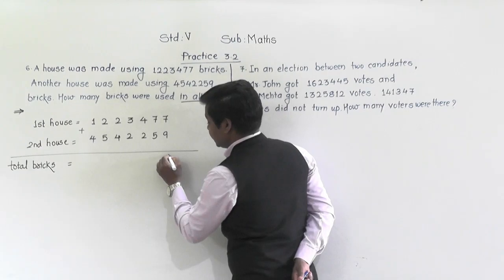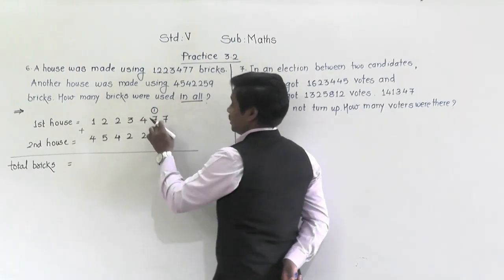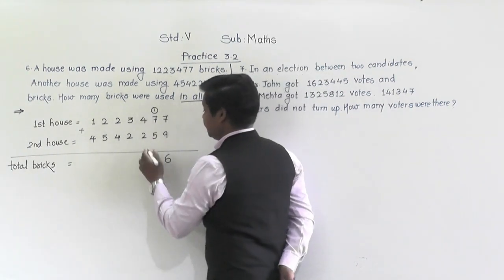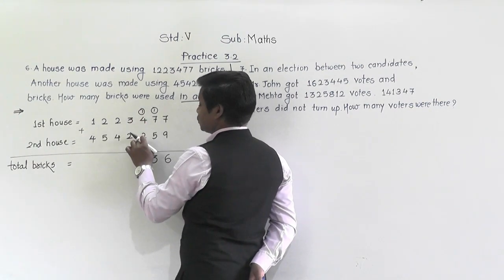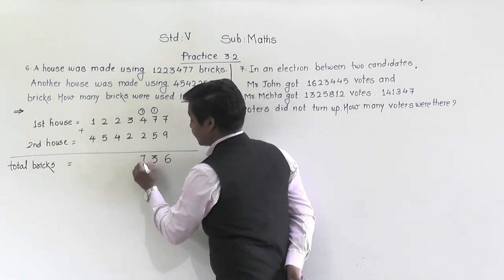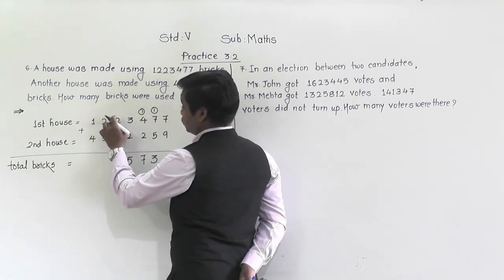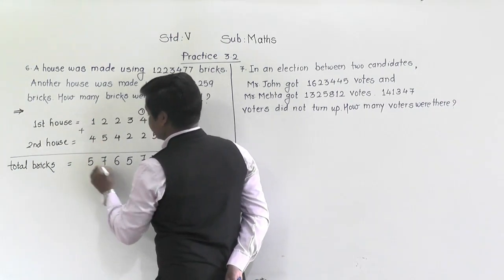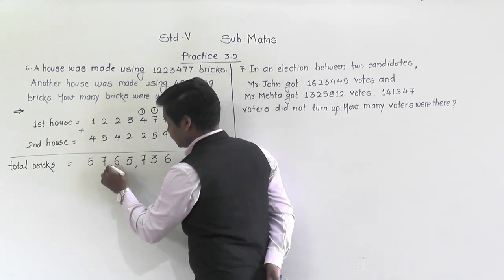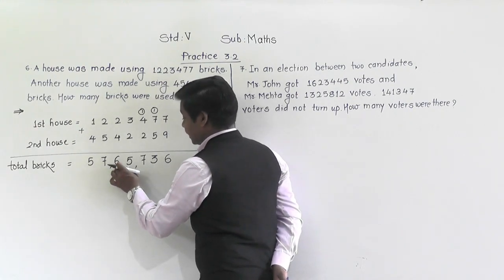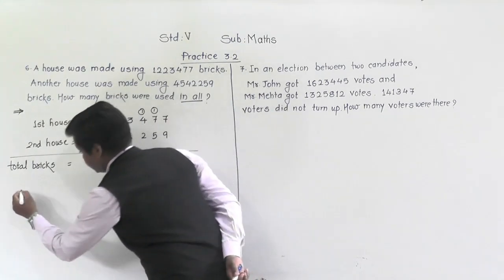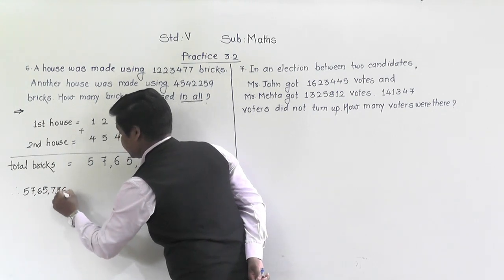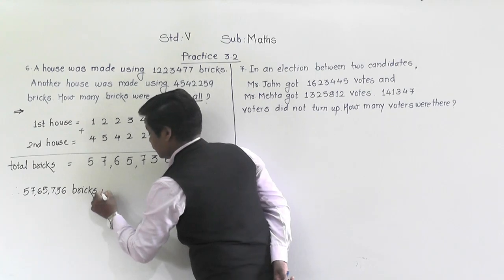Let's add: 7 plus 9 is 16, so 6 comes here, one is carried. 7 plus 5 is 12, plus 1 carried is 13, so 3 comes down, one is carried. 4 plus 2 is 6, plus 1 is 7. 3 plus 2 is 5. 2 plus 4 is 6. 2 plus 5 is 7. 1 plus 4 is 5. So total 57,65,736 bricks were used in all.